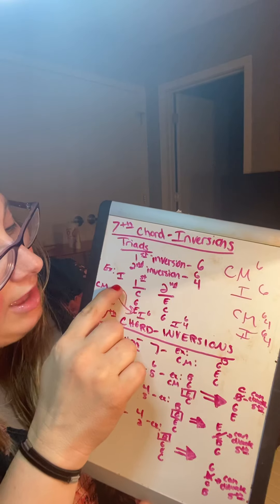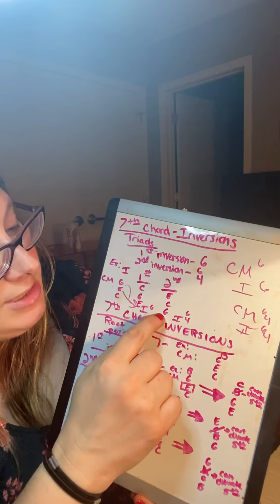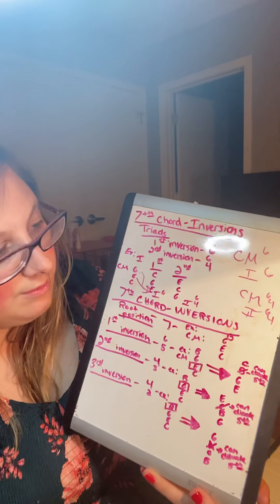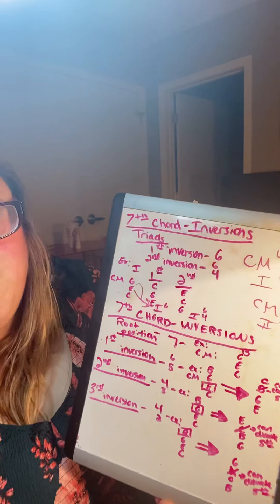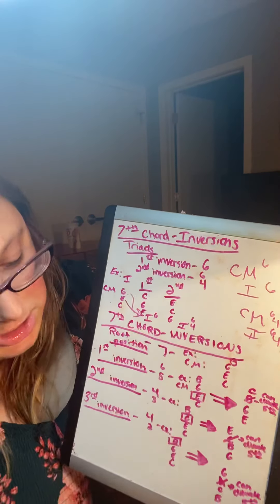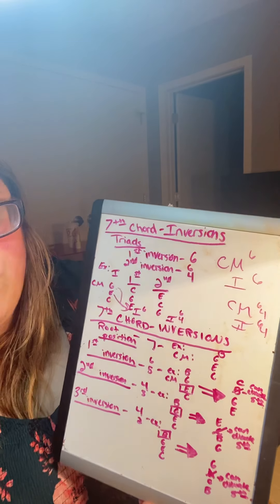But if I were to put the highest one, the fifth note in the scale and make it the root position, make it the root, it would be G, C, E. And that would be your second inversion of the chord and you would write it as C major six four, or I six four.